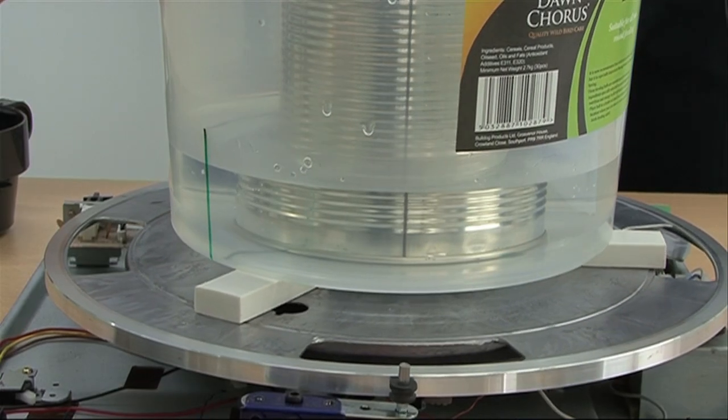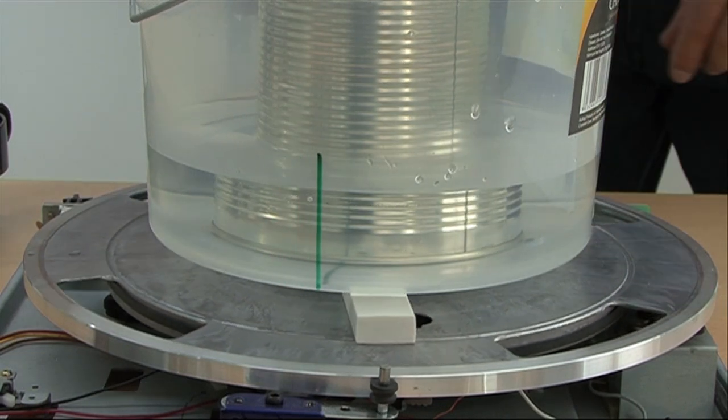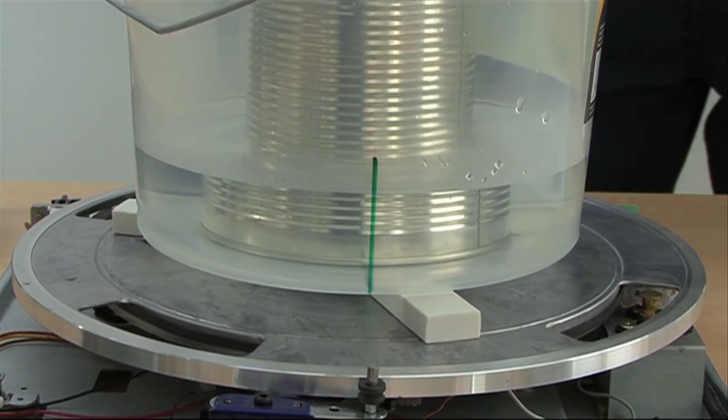Now I'm going to add some ink to the water so that we can see the movement. I'm going to add the ink roughly in line with this green mark on the side of the tank.